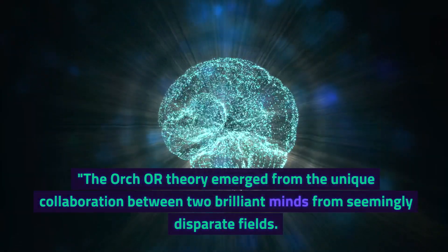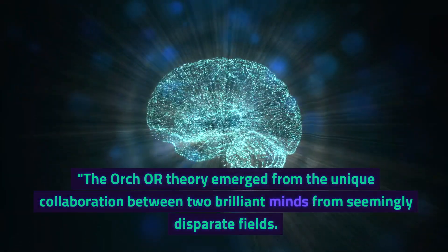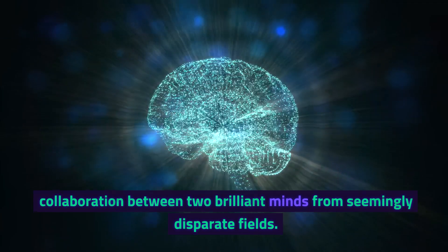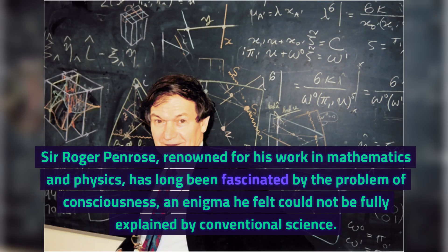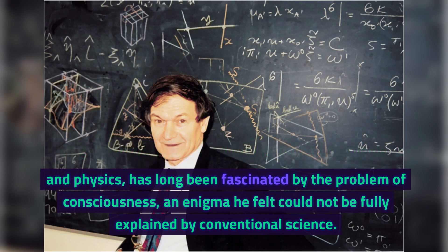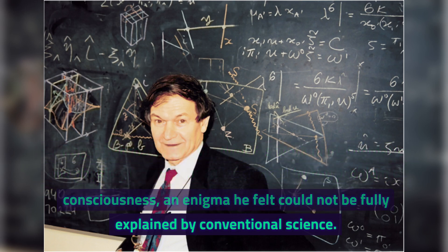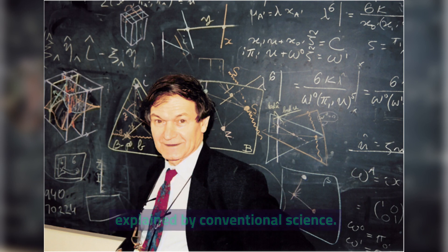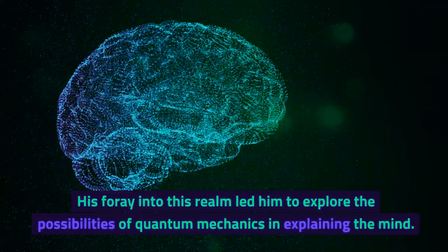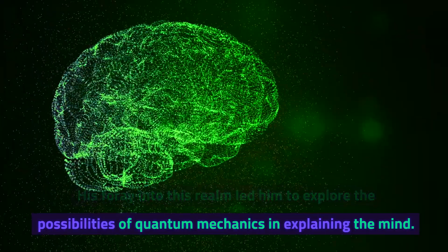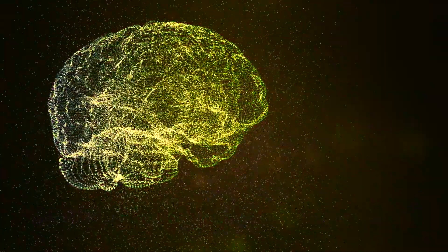The Orch OR Theory emerged from the unique collaboration between two brilliant minds from seemingly disparate fields. Sir Roger Penrose, renowned for his work in mathematics and physics, has long been fascinated by the problem of consciousness, an enigma he felt could not be fully explained by conventional science. His foray into this realm led him to explore the possibilities of quantum mechanics in explaining the mind.